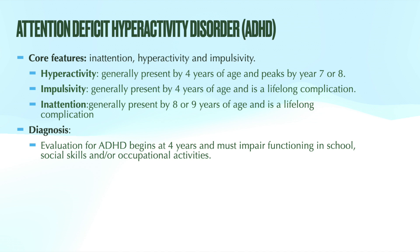Hyperactivity and impulsivity almost always coexist and they present with symptoms of fidgeting, difficulty staying seated, difficulty waiting turns, difficulty playing quietly, and often engaging in excessive talking or interrupting. These symptoms generally present around four years of age and then become more noticeable over the next three to four years, after which hyperactivity symptoms generally begin to decline.